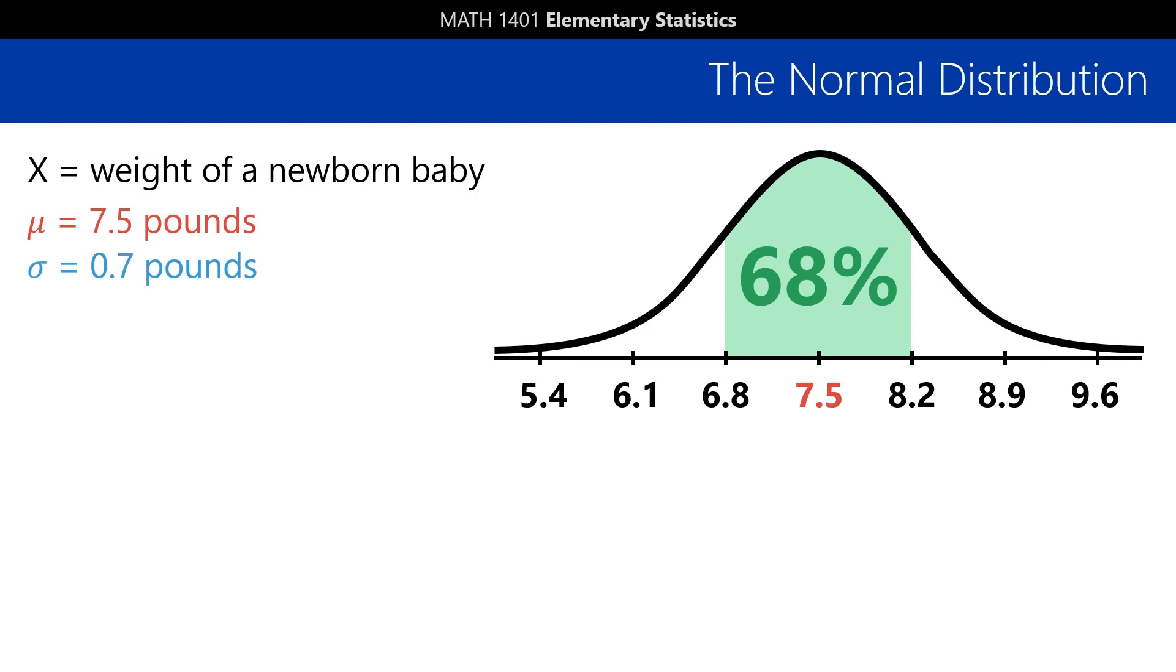But we can frame this same statement as a probability. If we pick a random newborn, there's about a 68% chance that its weight will be between 6.8 and 8.2 pounds.